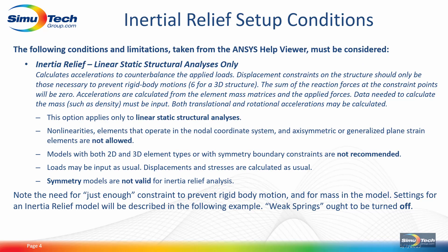If you go into the ANSYS help system, there are some conditions and limitations to be aware of. First, it needs to be a linear static structural analysis. We need just enough constraints to prevent rigid body motions — a total of six constraints in a 3D model. The sum of reaction forces should be zero when the constraints have been chosen well. The acceleration of the body, calculated internally, will be based on the element mass matrices and the force that's been put in. Mass has to be properly represented, meaning correct densities for your bodies and perhaps some added masses.